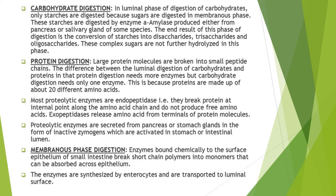In the membranous phase digestion, enzymes are bound chemically to the surface epithelium of the small intestine. The polymers produced as a result of protein or carbohydrate digestion in the luminal phase cannot be absorbed across the epithelium. So the enzymes bound to the surface epithelium break these short chain polymers into monomers, which can then easily be absorbed. These enzymes are synthesized by enterocytes and transported to the luminal surface, facing the lumen.